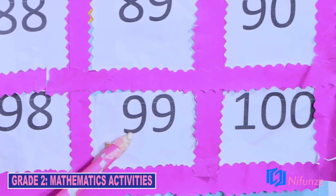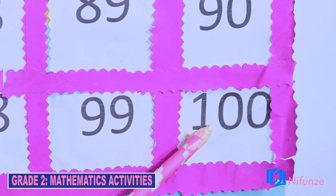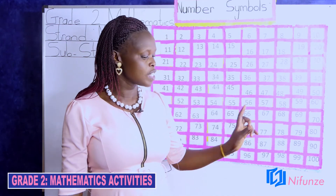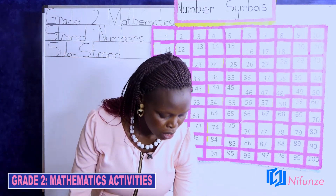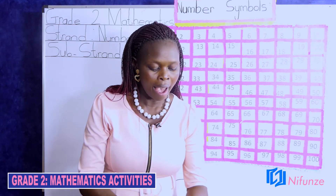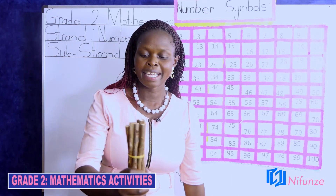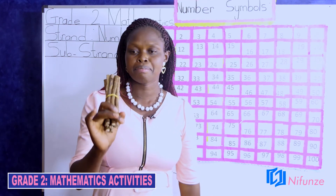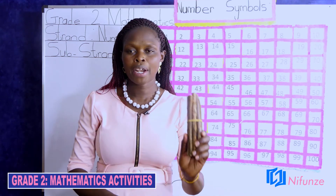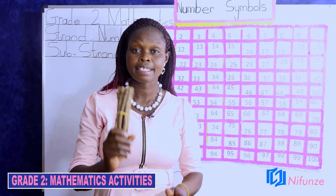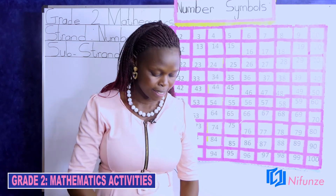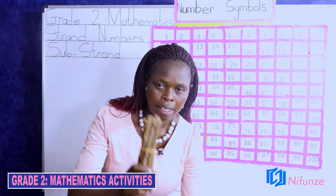Now, children, I want us to count these numbers using objects. Here with me I have sticks. I have folded these sticks in bundles of 10. This one bundle represents 10 sticks. So we are going to count in 10s: 10,